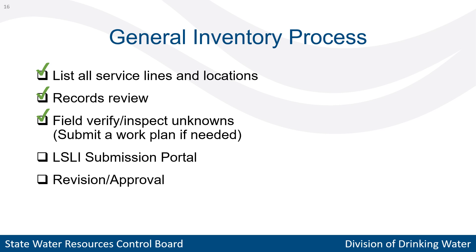If you only inspect a portion of unknowns, be sure to submit an inventory work plan. Fourth, submit the completed inventory on the submission portal for review. The last step is to revise the inventory if needed and receive an approval confirmation email from the LCRR unit. Next, we'll get into some details and see what these steps look like in the template or portal.